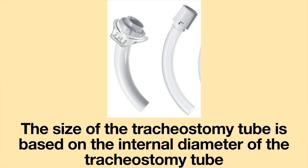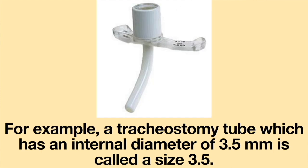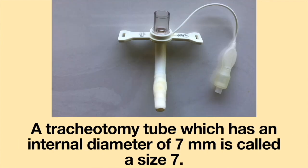The size of the tracheostomy tube is based on the internal diameter of the tracheostomy tube without the inner cannula. For example, a tracheostomy tube which has an internal diameter of 3.5 mm is called a size 3.5.